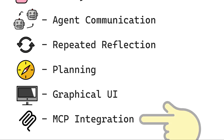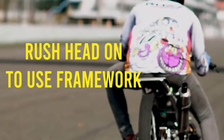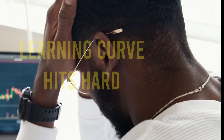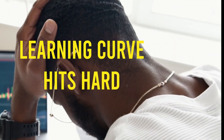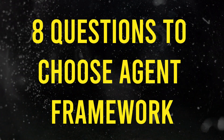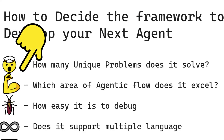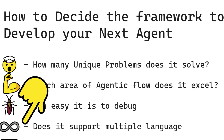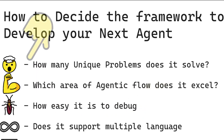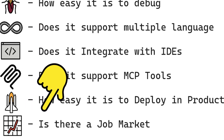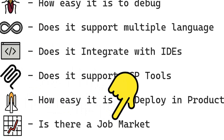After breaking agents down into parts, many rush to try the most starred or hyped frameworks. But when the learning curve hits hard or the design feels unintuitive, they give up. Don't make that mistake. When choosing the right agentic framework, consider the unique problem it addresses, how easy it is to debug, whether it supports multiple programming languages, how well it integrates with MCP servers, and even job opportunities.